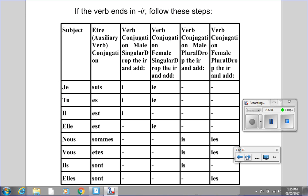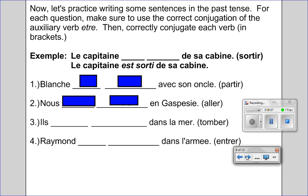Now let's get into some activities. For each question, make sure to use the correct conjugation of the auxiliary verb être, then correctly conjugate each verb in brackets. For example, 'le capitaine ___ de sa cabine' with the verb sortir. Le capitaine is masculine singular, so it's 'le capitaine est' — and because it's masculine singular, we drop the IR and put I at the end. Please put the video on pause now so that you can try out these two questions, and I will reveal the correct answers once you resume.